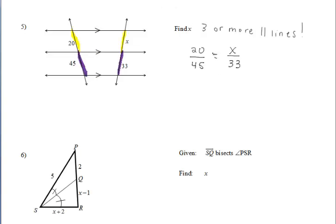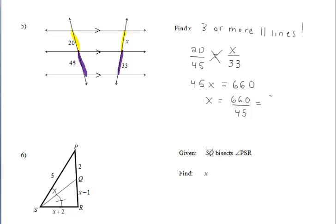For example 5, we're using the three or more parallel lines theorem. You should set up your proportion like this. And you should get that X has a value of 44 thirds when you reduce that fraction.